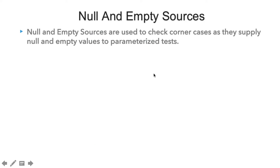Basically, null and empty sources are used to check the corner cases of our code by supplying null and empty values to our parameterized test. Let's say we are using @ParameterizedTest and we want to check for null and empty values. These are often corner cases that we want to verify, and we can simply use the null and empty sources to provide those values.